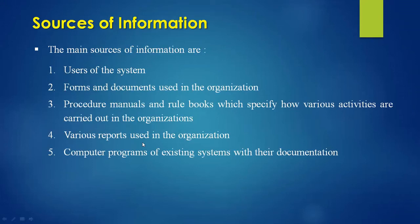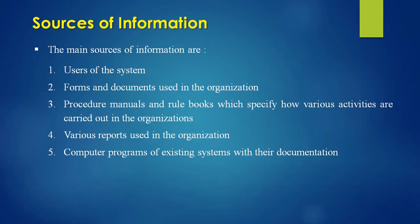The main sources of information include: first, the users of the system, who know best how every task is carried out and have experience with the situations in the organization. Second, the forms and documents used in the organization — existing documents, history, and achievements are all available as sources of information, including field information from forms.